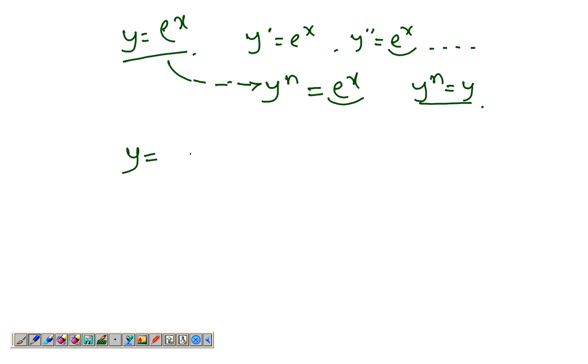Similarly, for y equals ax^n, y dash would be anx^(n-1). y double dash would be an(n-1)x^(n-2).